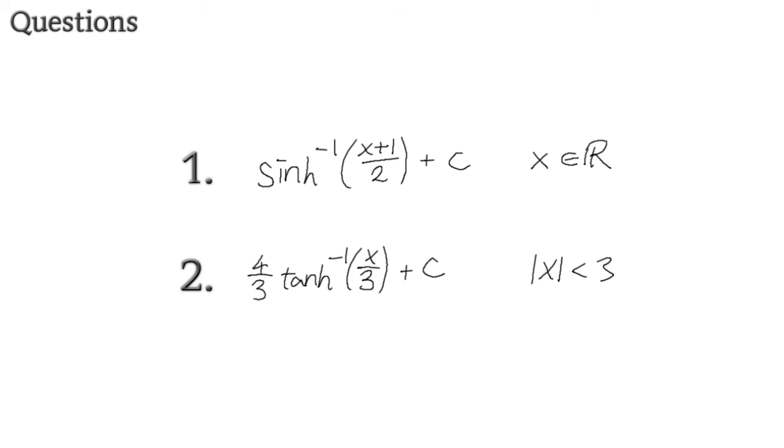I deliberately made it a bit confusing for the first one because you need to first of all complete the square, then you need to take out the factor of four, and after the square root turns into x plus one on two, so it's a bit less obvious but it's still doable. It should be manageable.